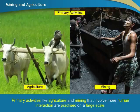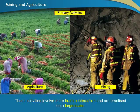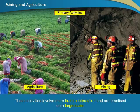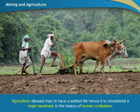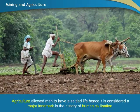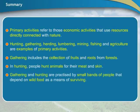Agriculture and mining are the primary occupations of men that have contributed extensively to the economic development of human civilization. These activities involve more human interaction and are practiced on a large scale. Agriculture allowed man to have a settled life, hence it is considered a major landmark in the history of human civilization. Let us now recap all the important points that we have covered in this module on types of primary activities.